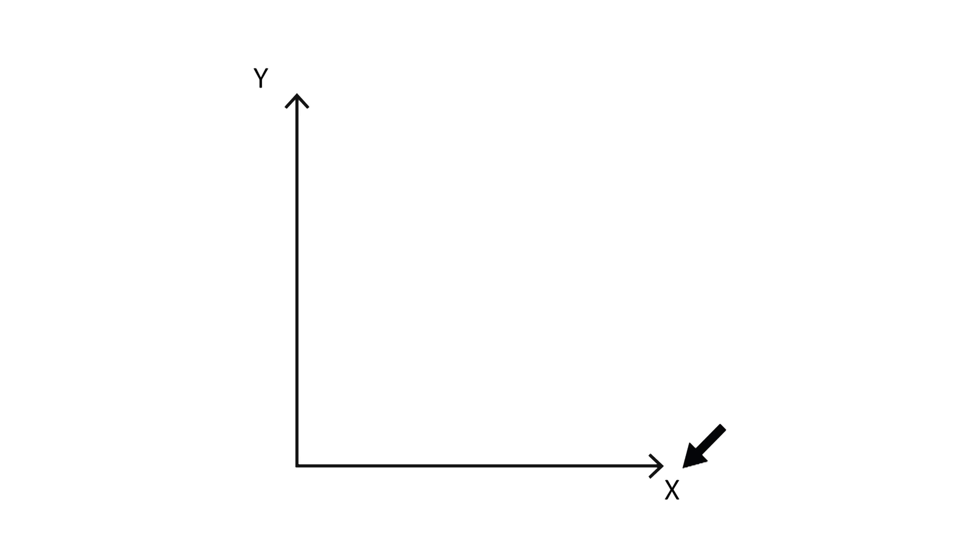The x-axis, or horizontal axis, shows the amount of good x a consumer can consume, while the y-axis, or vertical axis, shows the amount of good y this consumer can consume.